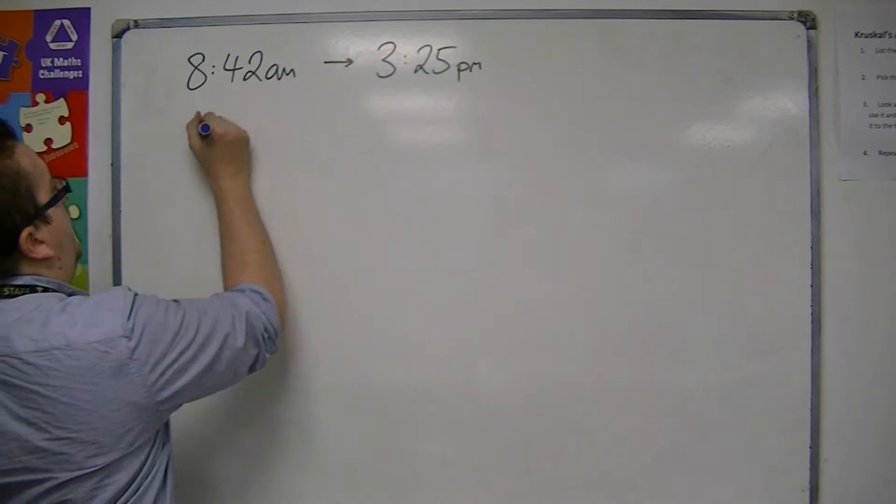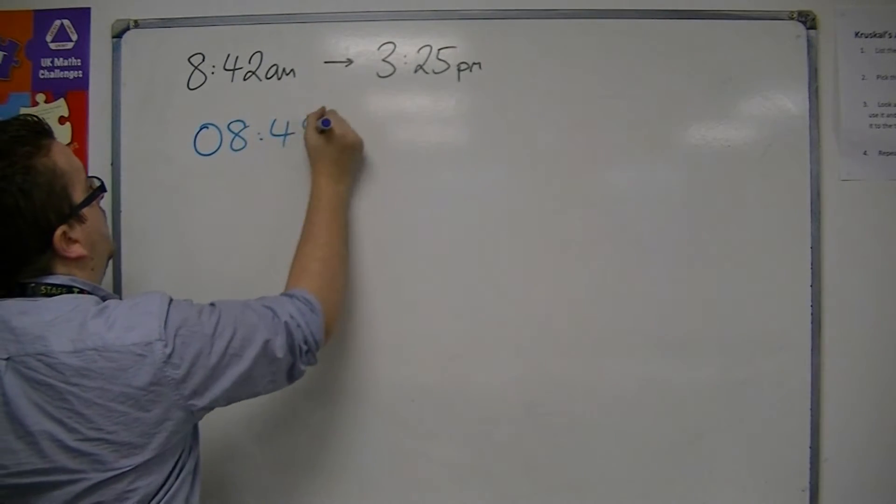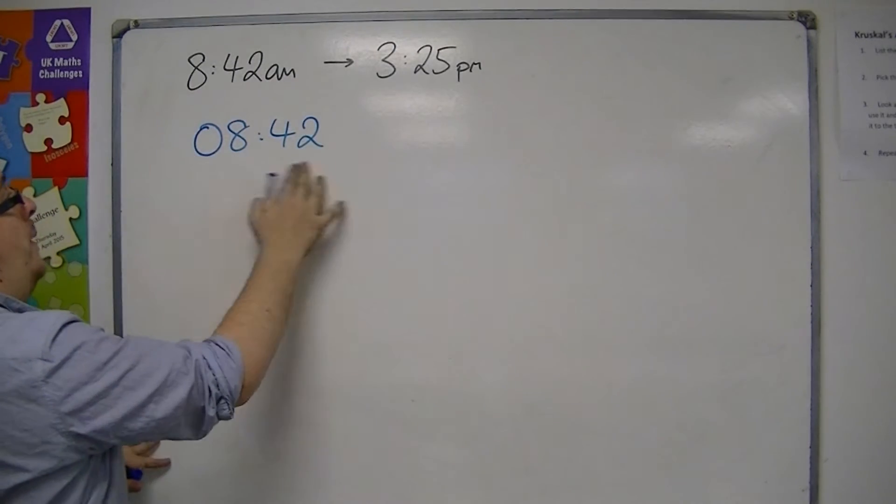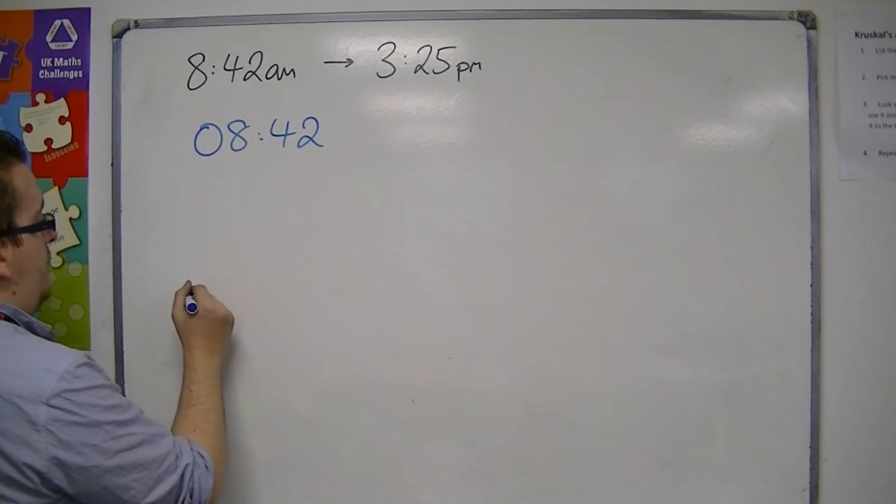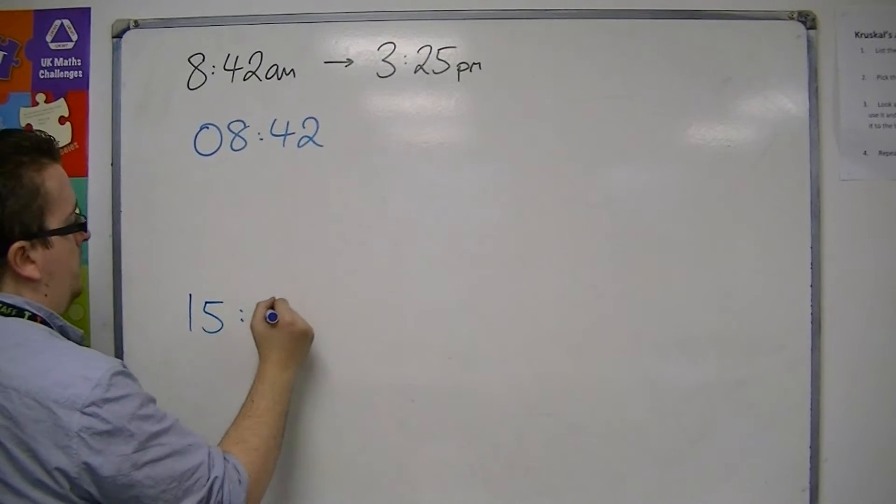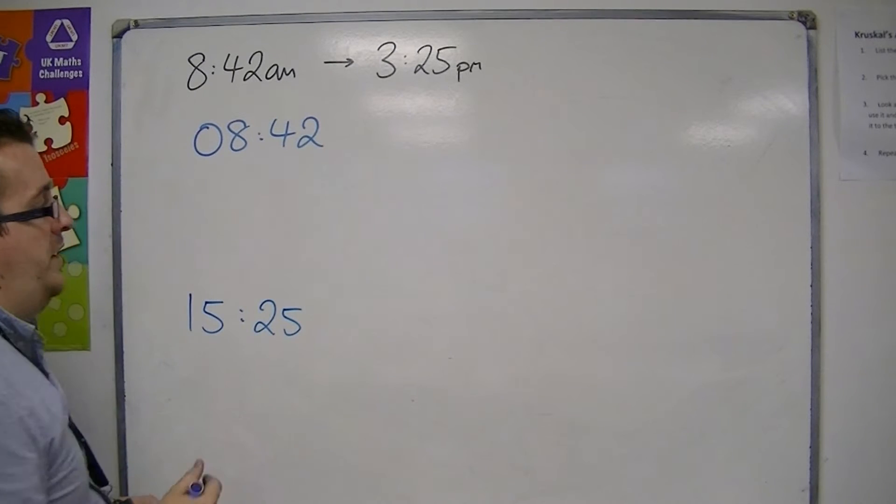So I convert it into 24-hour clock, so 8:42 AM and 3:25 PM is 15:25 in 24-hour.